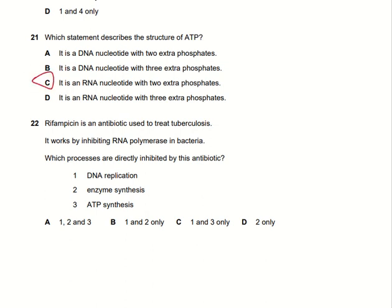Rifampicin is an antibiotic used to treat tuberculosis. It works by inhibiting RNA polymerase in bacteria. Which processes are directly inhibited by this antibiotic? If it inhibits RNA polymerase, it inhibits protein synthesis. It will not affect DNA replication or ATP synthesis, but it will affect enzyme synthesis, which is protein synthesis. So option D is the right answer.